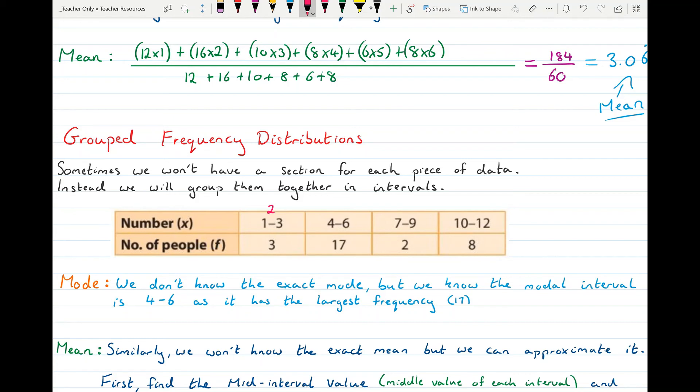And from 4 to 6, the middle value is going to be 5. From 7 to 9, the middle value is 8. And from 10 to 12, the middle value is 11.